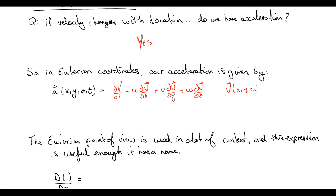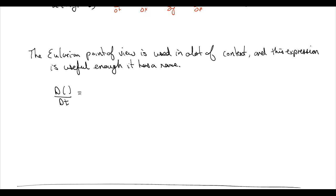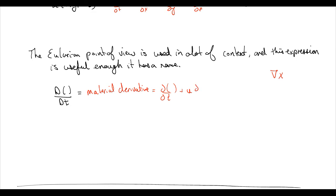The Eulerian point of view is used in a lot of contexts, not just about velocity but also with many other things. We can talk about something called the material derivative — it's an operation just like the gradient or the curl. We write capital D/Dt as equal to the partial with respect to t, plus u times the partial with respect to x, plus v times the partial with respect to y, plus w times the partial with respect to z.